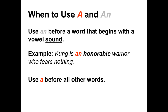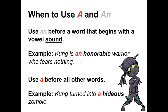Use the indefinite article 'a' before all other words, or words that begin with consonant sounds. Here is an example: 'Kung turned into a hideous zombie.' The indefinite article 'a' comes before the word 'hideous.' The word 'hideous' also begins with an H, but in this case the H is pronounced. Since the H is not silent, the word begins with a consonant sound, and therefore we must use 'a' rather than 'an.'